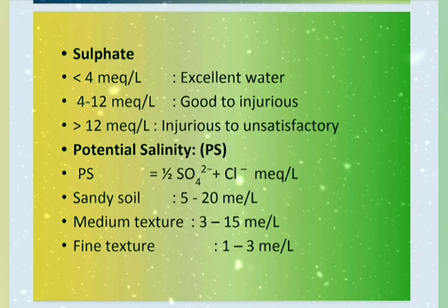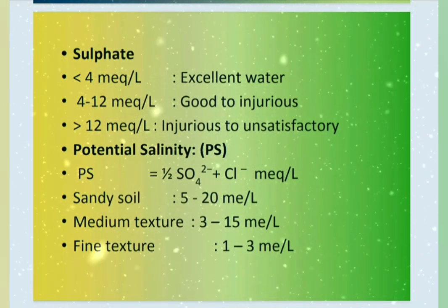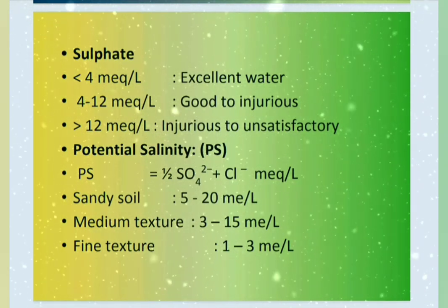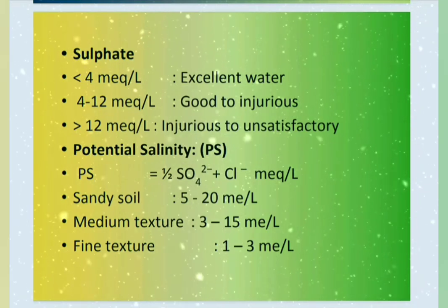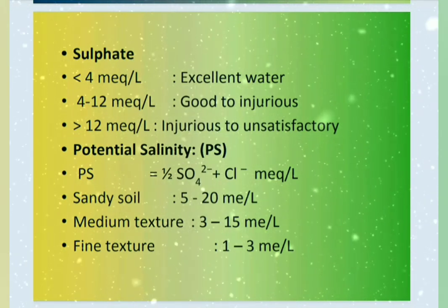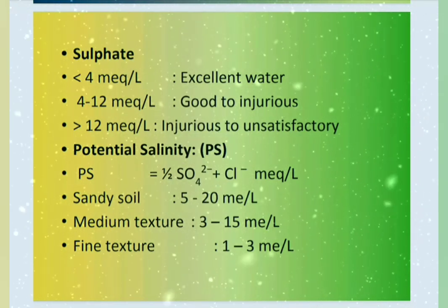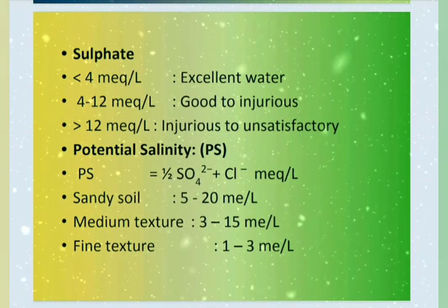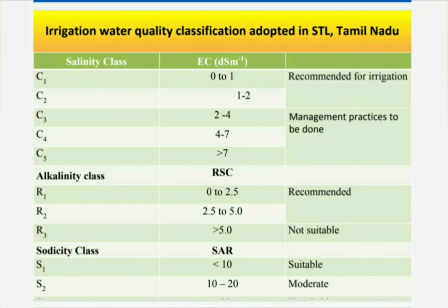Potential salinity can be calculated by adding half of the sulfate — since half of the sulfate causes salinity — plus the addition of chloride. This is the irrigation water quality classification prepared by the soil testing lab, Tamil Nadu. Thank you.